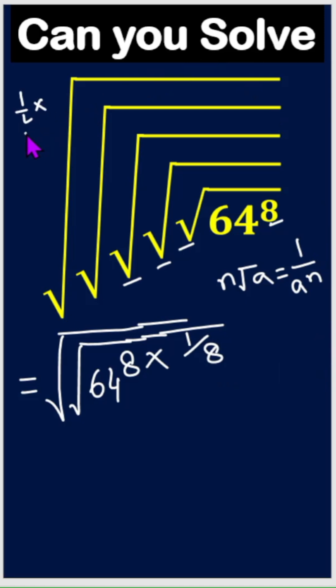1 over 2 times 1 over 2 times 1 over 2. 2 times 2 is 4, 4 times 2 is 8. Each root is 1 over 2. Root means power will be 1 over 2. So this 8 and this 8 cancel out.